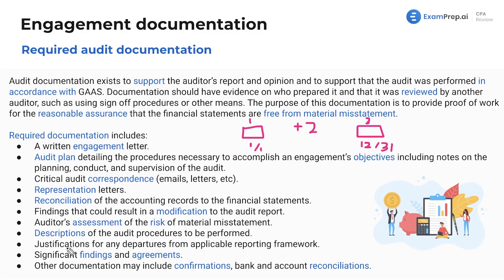Justifications for any departures from the applicable reporting framework — for legitimate reasons, if it makes sense to depart from GAAP a little and would avoid misleading investors or users of the financial statements, then you should depart within reason. Significant findings and agreements — anything important that should not be excluded. Other documentation: confirmations, bank and account reconciliations — essentially your work papers and the evidence supporting them.